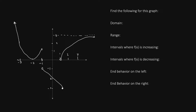First, let's start with domain. To find the domain, we want to list the possible x values going from left to right. Let's begin with the first piece on the left, which I label piece A. Piece A begins with a left arrow, and if you see a left arrow, that means x is going to negative infinity, since negative infinity lies on the left side of the graph.